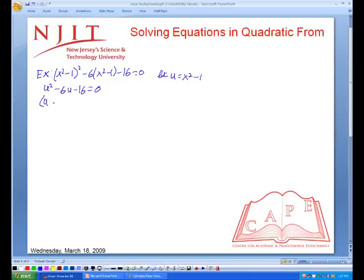Factoring we get u minus 8 times u plus 2 equals 0. This gives us u minus 8 equals 0 which means u equals 8, and u plus 2 equals 0 which means u equals negative 2.